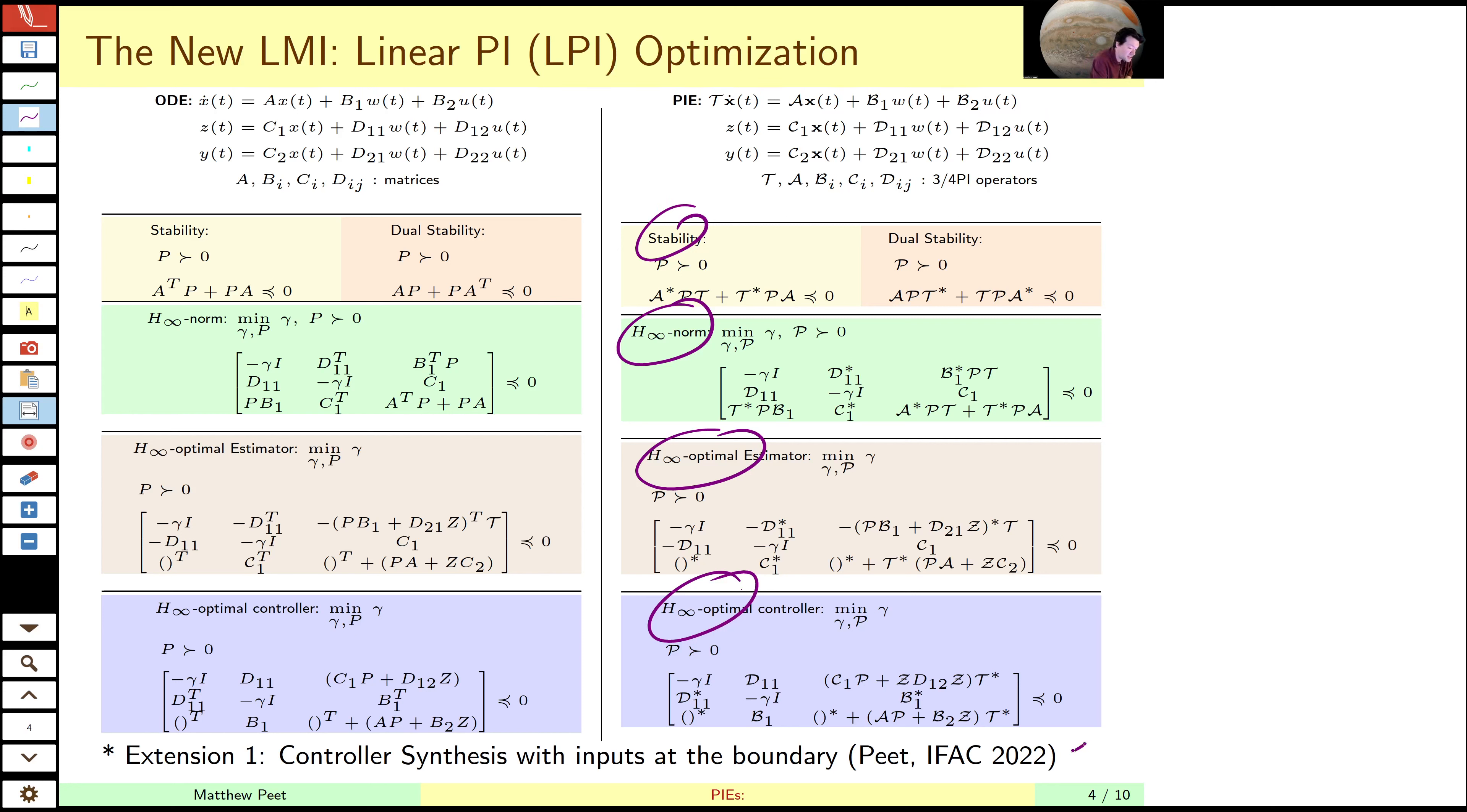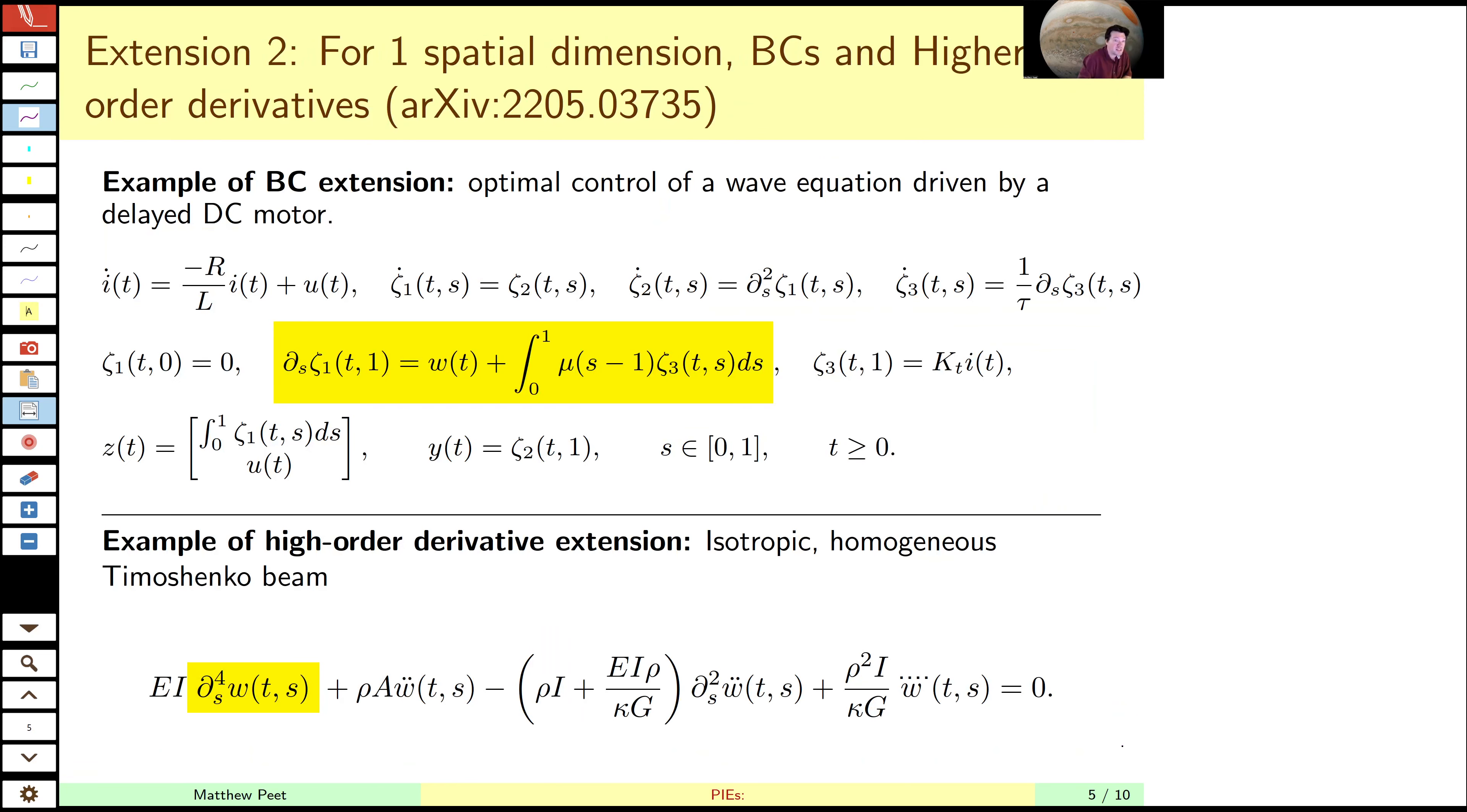The extension this year is that we're now able to handle the case where we have inputs at the boundary, boundary control problems, which is something we didn't cover last year. Second extension, we can handle now more complicated boundary conditions, for example, if we have a disturbance at the boundary or there's a boundary condition which depends on the integral of the state.